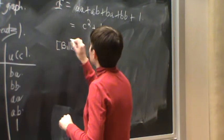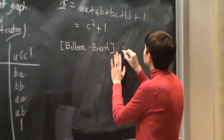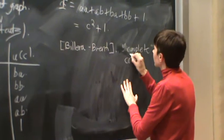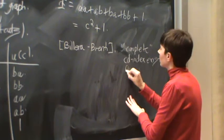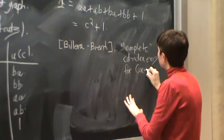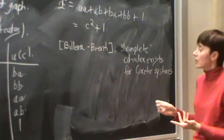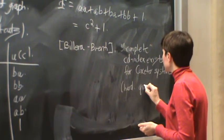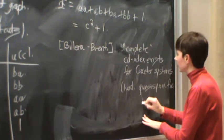So actually, Brenti and Valera showed that you have this complete CD index exists for Coxeter systems, for the Coxeter groups. And the thing is, this was hard. So you should think hard, and this is a hard paper. It uses quasi-symmetric functions. Yeah, I mentioned this before, peak algebra, it's hard.